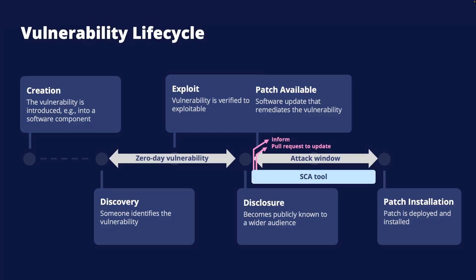A related term often used in this context is zero-day vulnerabilities — these are vulnerabilities that have not yet been disclosed. A vulnerability is a zero-day between the discovery and the disclosure phases. If discovered by a malicious actor, the attack window ranges from when an exploit is available until the patch has been installed. The most dangerous phase is between the exploit phase and the disclosure phase, since even without a patch, we can detect attacks if we know about the vulnerability — but if we don't know, we wouldn't know what to look for.